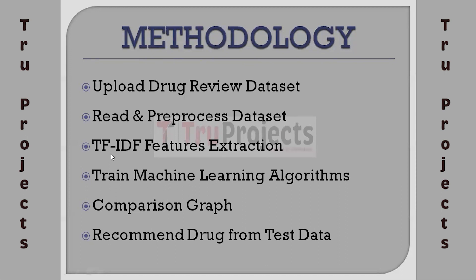The next module is TF-IDF Features Extraction. The features array is input to the TF-IDF algorithm, which finds the average frequency of each word, replaces that word with its frequency value, and forms a vector. If a word doesn't appear in the sentence, it puts zero. All reviews are considered as input features to the machine learning algorithm.